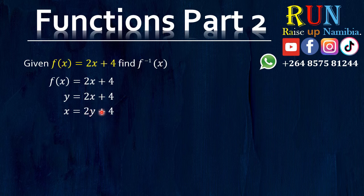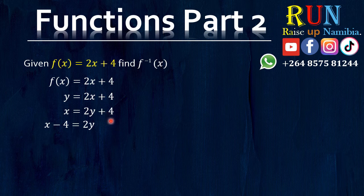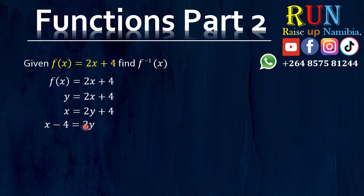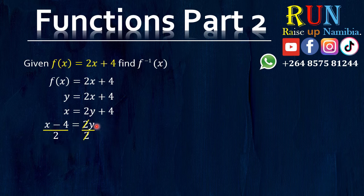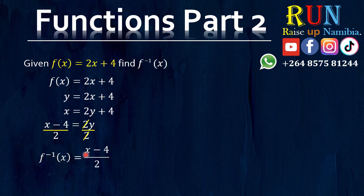So how do we make y the subject of the formula? By getting y to be alone on one side. Let's remove this positive 4 — we take it to the left hand side where it will become negative 4. So it will be x minus 4. From there, we are left with 2y is equal to x minus 4. But we don't want 2y, we want y alone, so we need to cancel out the 2 by dividing by 2 on both sides. You will be left with y is equal to x minus 4 divided by 2. So the inverse of f of x is equal to x minus 4 divided by 2 — that's your final answer.